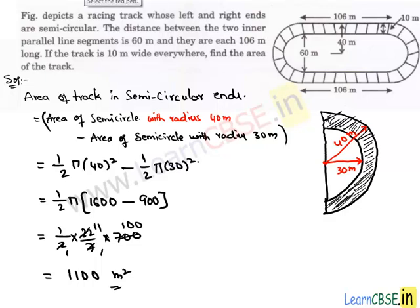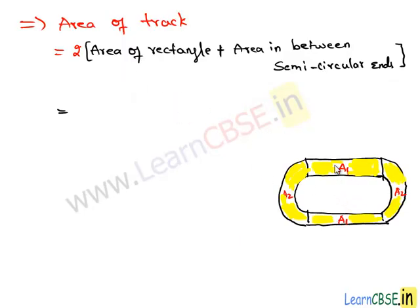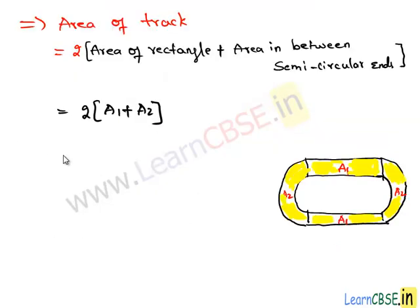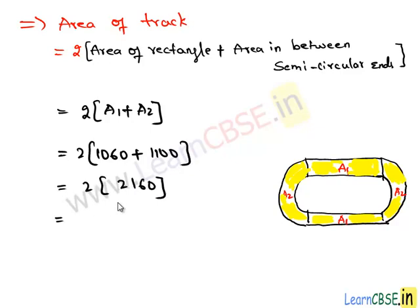Let us denote this area as A2. We have A2 and A1. Since both rectangles are equal, the area of the shaded region is A1 plus A1 plus A2 plus A2, which is 2 times A1 plus A2. Here A1 is the area of a rectangle and A2 is the area between the semicircular ends. So the area of the track is 2 times A1 plus A2 — that is 2 times 1060 plus 1100, giving 2 times 2160, which equals 4320 square meters. So this is the area of the track, and this completes our solution.